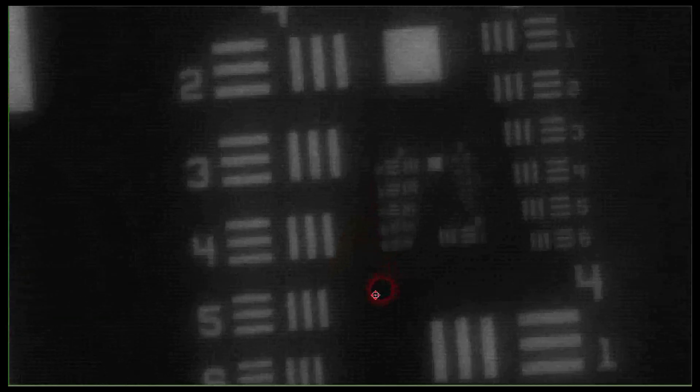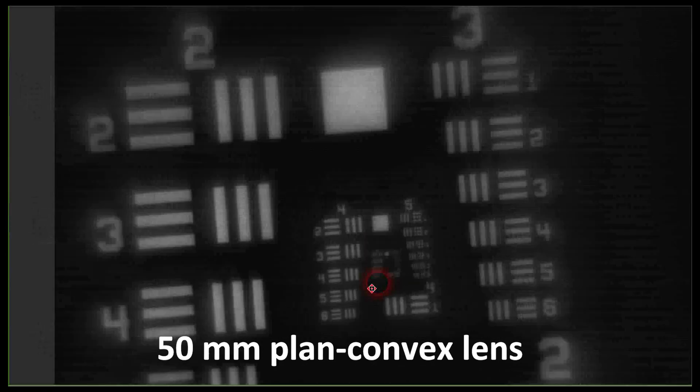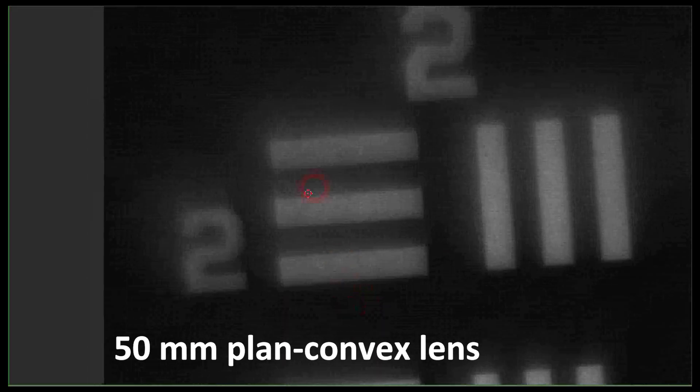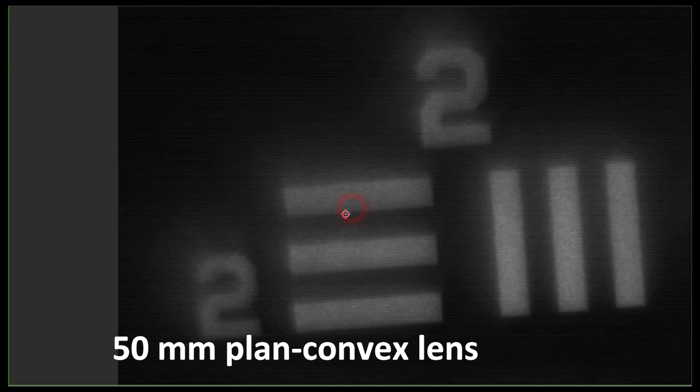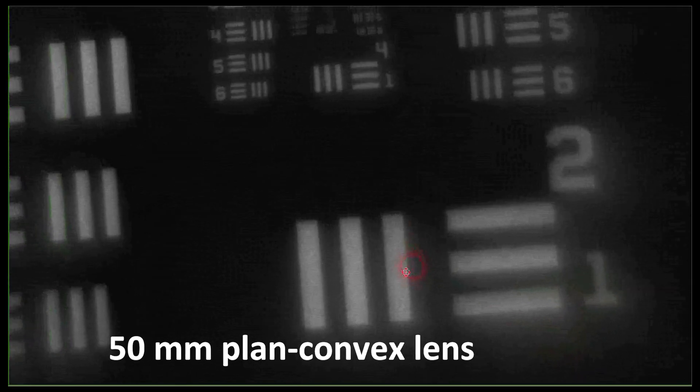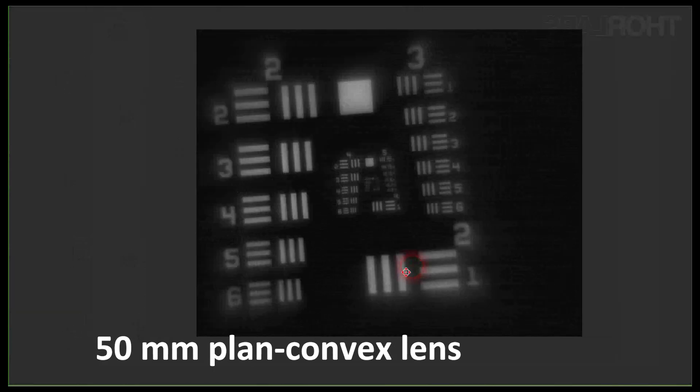Before we test the microscope objective, I would like to show you what you would obtain with a conventional plano-convex lens. You see that the image has some kind of blur at the center which is typical of spherical aberration, but you also have blur on the outside of the image which is due to both coma and field curvature. The point is, do not expect to have good images with only one lens.